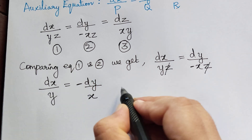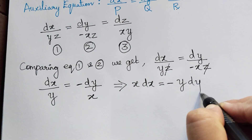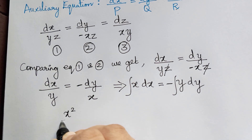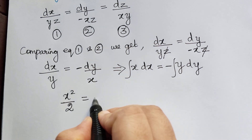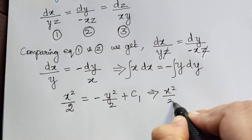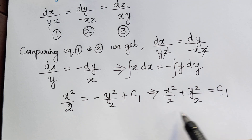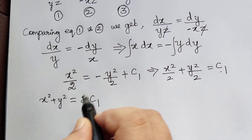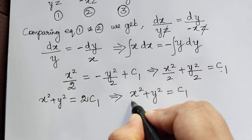Taking x to the other side, we get x dx equals negative y dy. Integrating both sides, the integration of x gives x squared over 2 equals negative y squared over 2 plus constant c1. Rearranging, x squared over 2 plus y squared over 2 equals c1. Taking the LCM, x squared plus y squared equals 2c1. Since 2c1 is again a constant, we write x squared plus y squared equals c1 as the first solution.